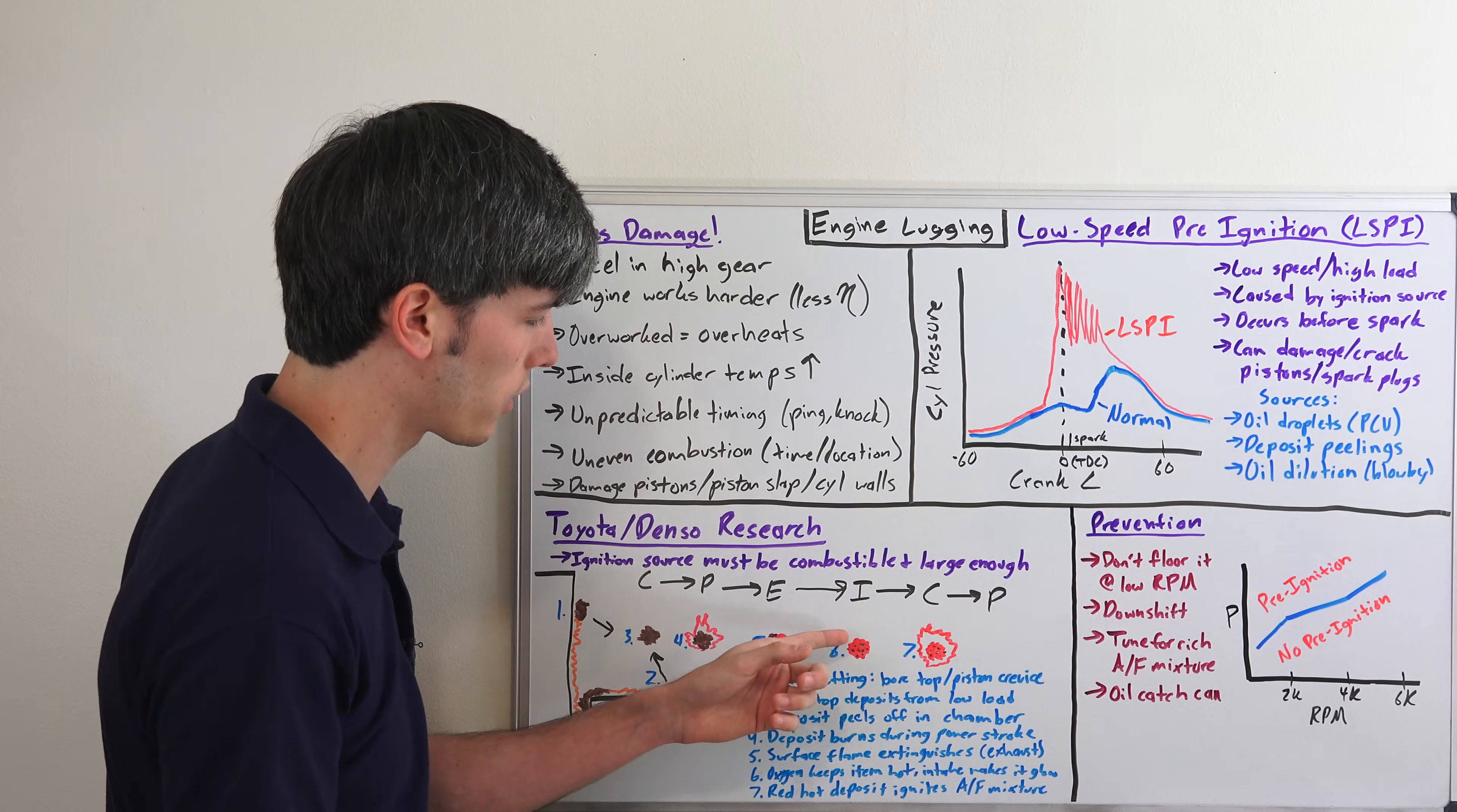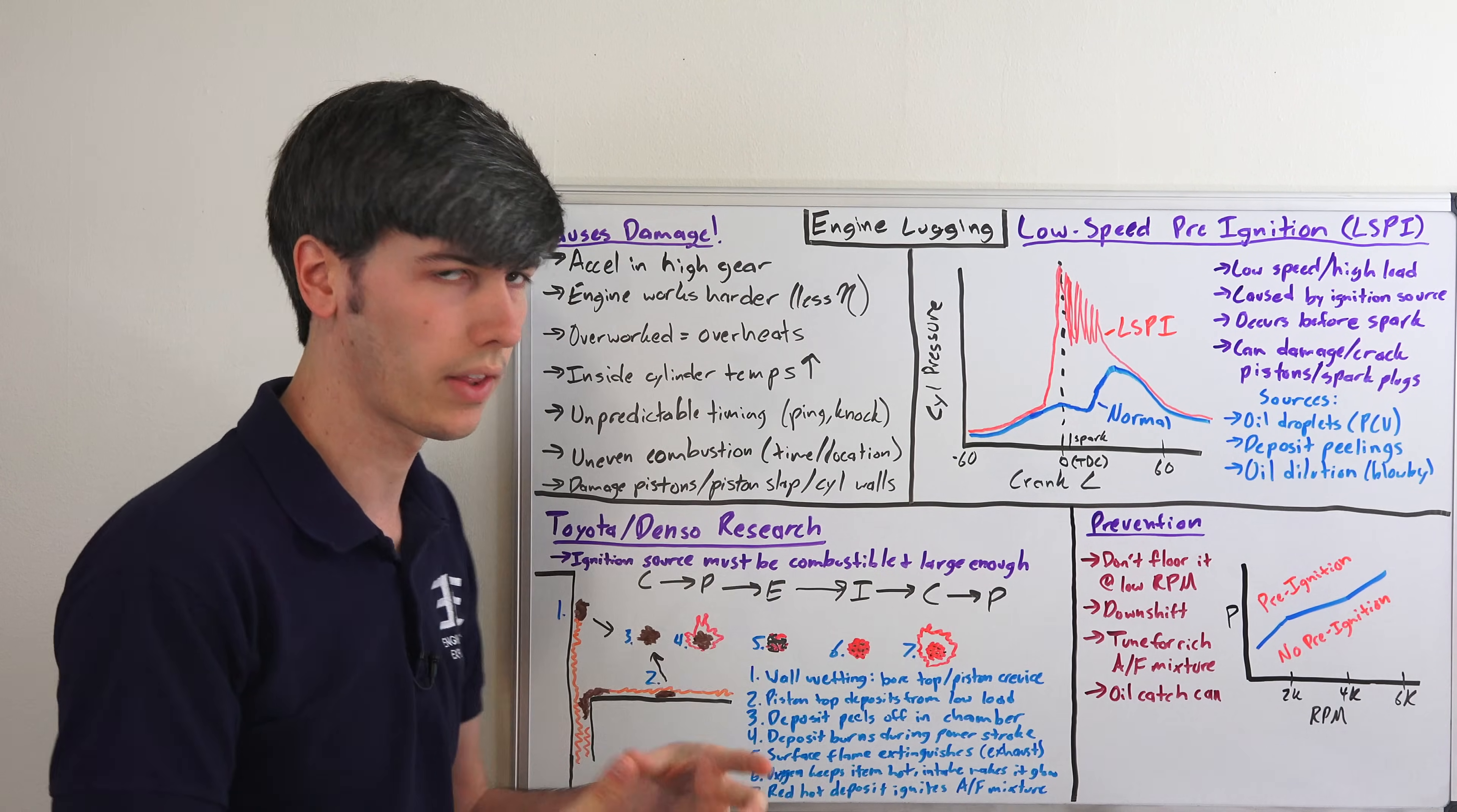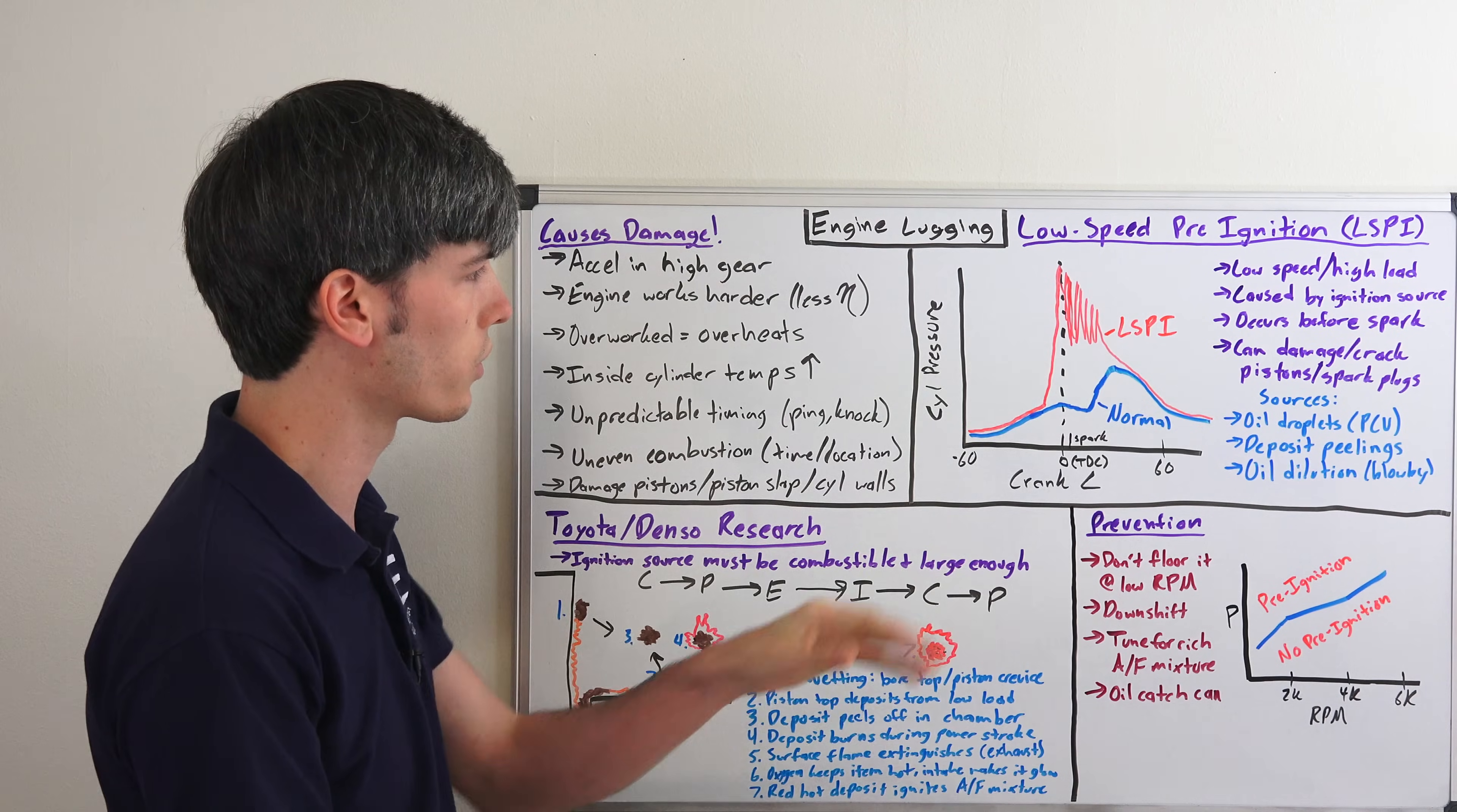Then you have your intake stroke and you're bringing in all kinds of new oxygen. So it really starts to glow once it's got all that oxygen around it. You have your compression stroke and you've introduced that air and fuel mixture. As a result, this glowing deposit now ignites that air and fuel mixture before your spark fires, and you have this low speed pre-ignition.